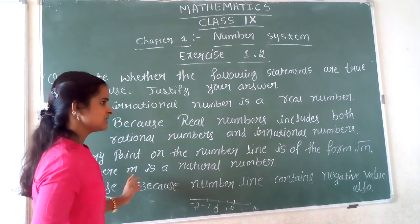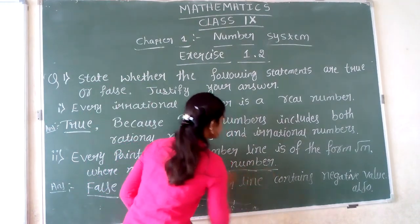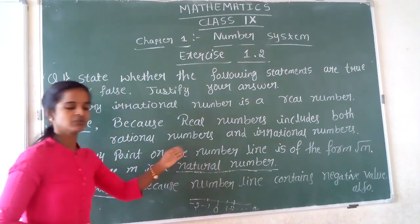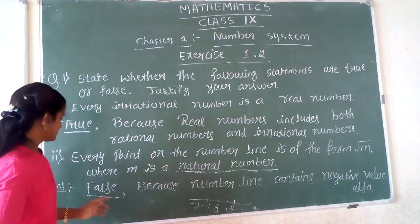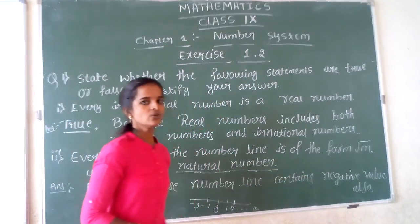Where M is a natural number. Since the number line contains both positive and negative values, not every point can be of this form. Therefore, this statement is false.